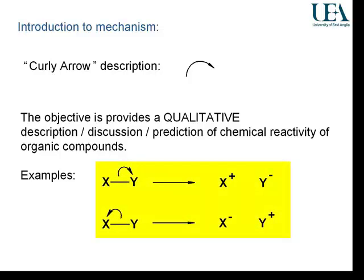I've chosen X and Y to represent parts of molecules. The mechanism describing this simple process has an arrow starting from the bond where the electrons are and transferring those electrons onto one of the atoms. I could take the electrons from the bond and put them on Y at the top or on X at the bottom — two possibilities for this process of breaking a bond.